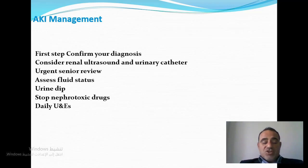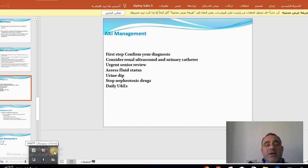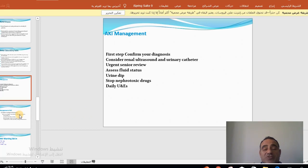How do we manage acute kidney injury? The first step is to confirm the diagnosis. AKI management begins with confirming the diagnosis, performing renal ultrasound and urinalysis, and inserting a urinary catheter if obstruction is present. A urine catheter is vital to calculate urine output and should be inserted in cases of AKI. Senior review — whether nephrology, urology, or other specialists — is mandatory. Nephrotoxic substances noted in the history should be stopped, and daily urinalysis, urea, and electrolytes should be performed.